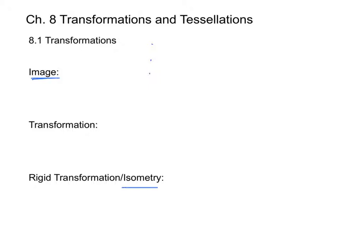A rigid transformation — also called an isometry — is a transformation that preserves size and shape. So if we have a square to begin with, we're going to have the same square and the same size after we're done.